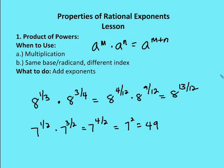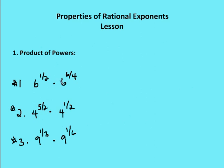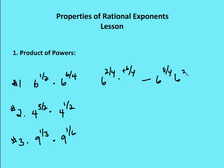Let's move on to some practice problems. The first is 6 to the 1 half times 6 to the 6 fourths. I have the same base and different exponents, so I need a common denominator. 1 half becomes 2 fourths. Adding 2 fourths plus 6 fourths gives me 6 to the 8 fourths, or 6 squared, which is equal to 36.